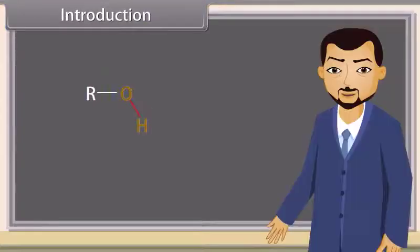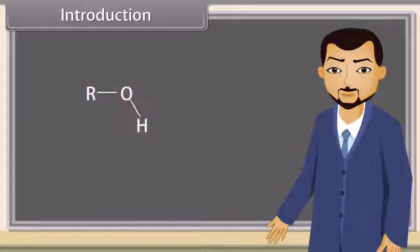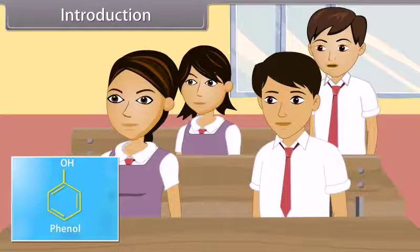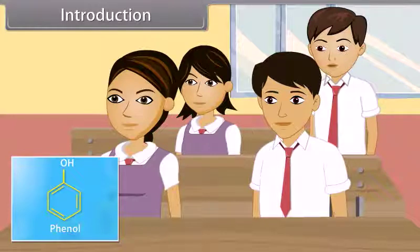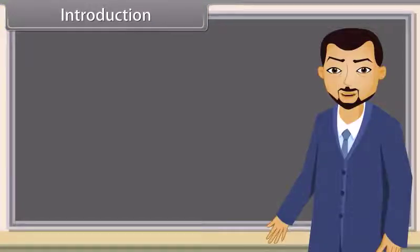The hydroxyl group is a functional group consisting of a hydrogen atom covalently bonded to an oxygen atom. Can anybody tell me what is phenol? Yes teacher — phenol is an organic compound where one hydrogen attached to a benzene ring is replaced by a hydroxyl group. Very good, Sunil. In this lesson we will learn about alcohols, phenols and ethers.